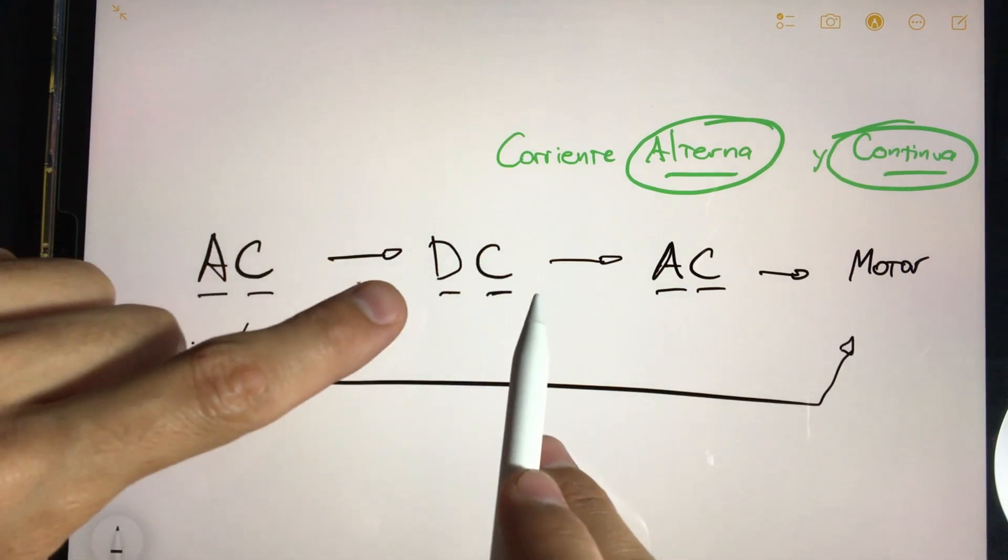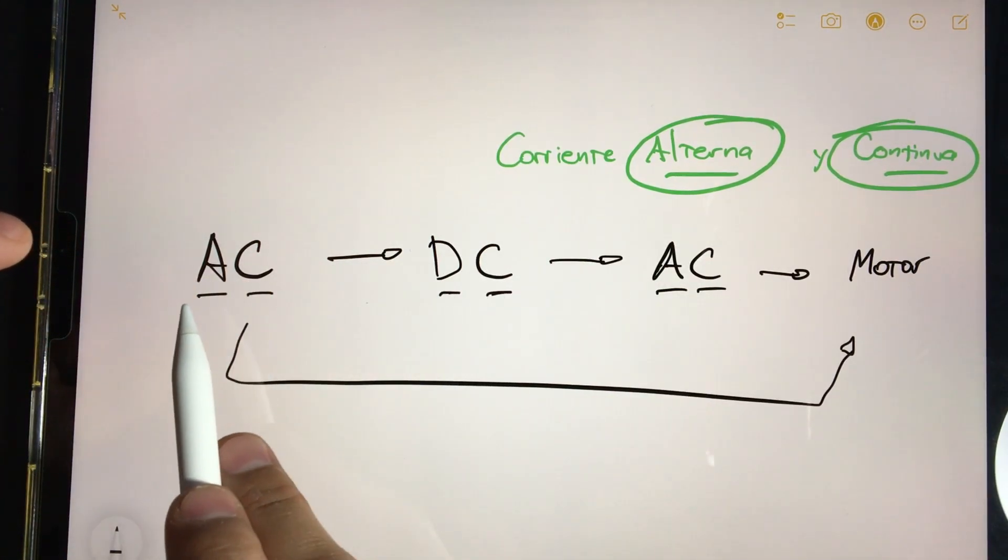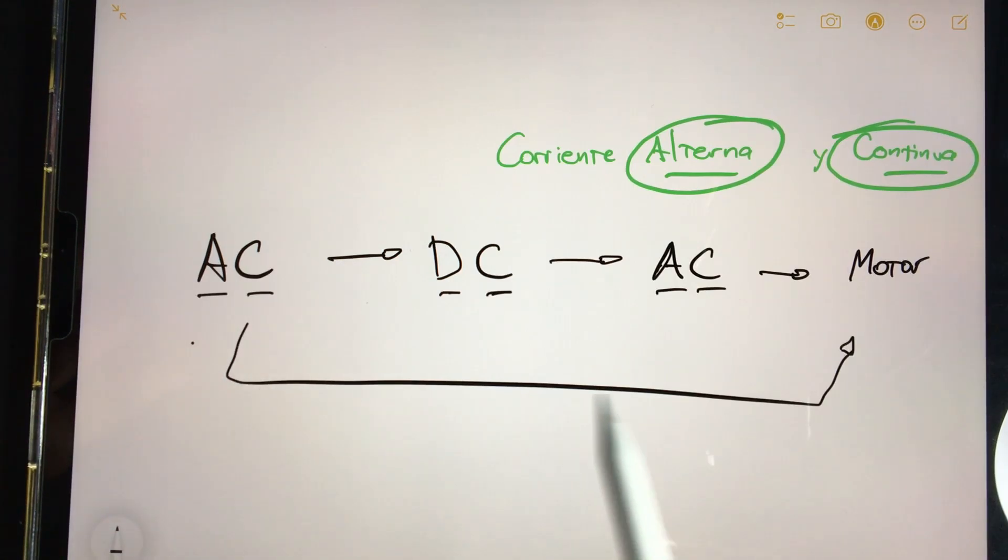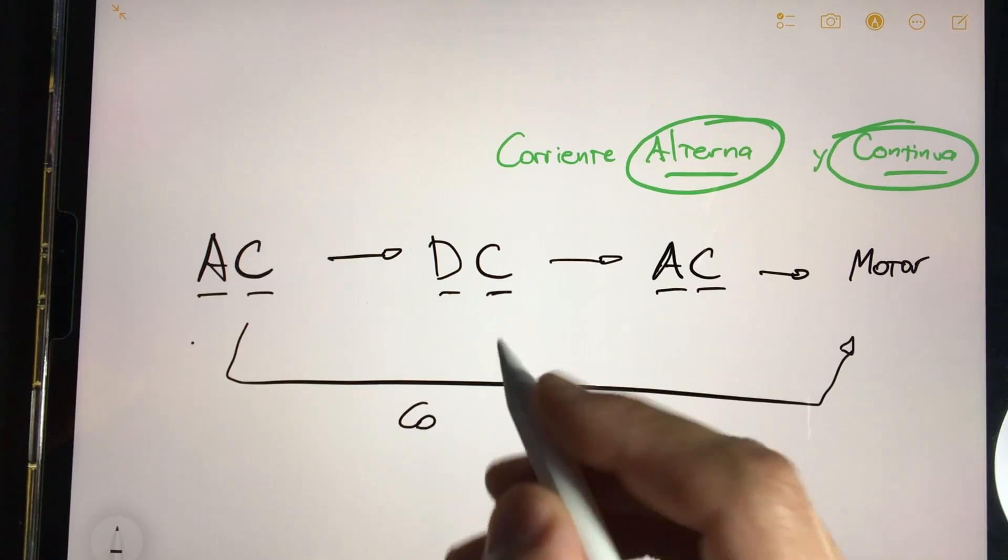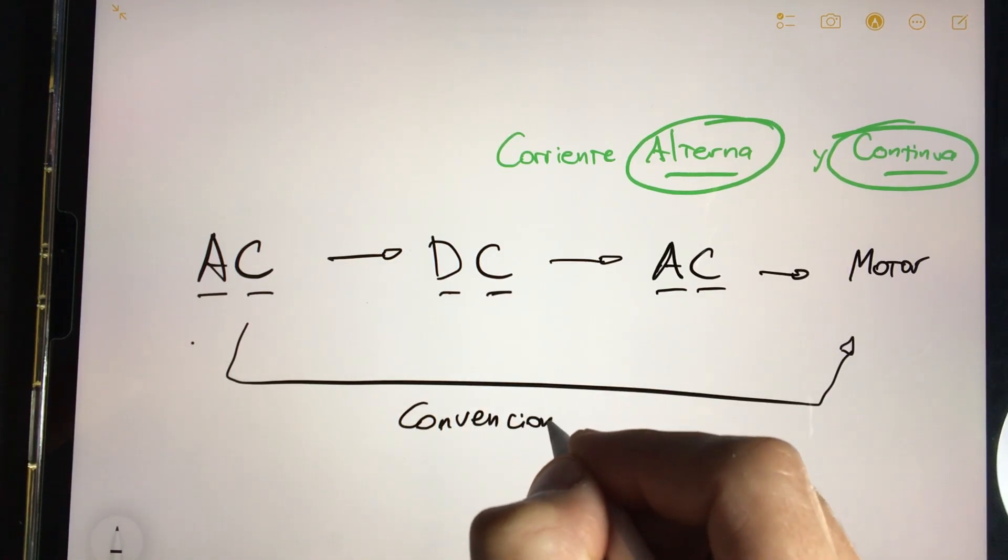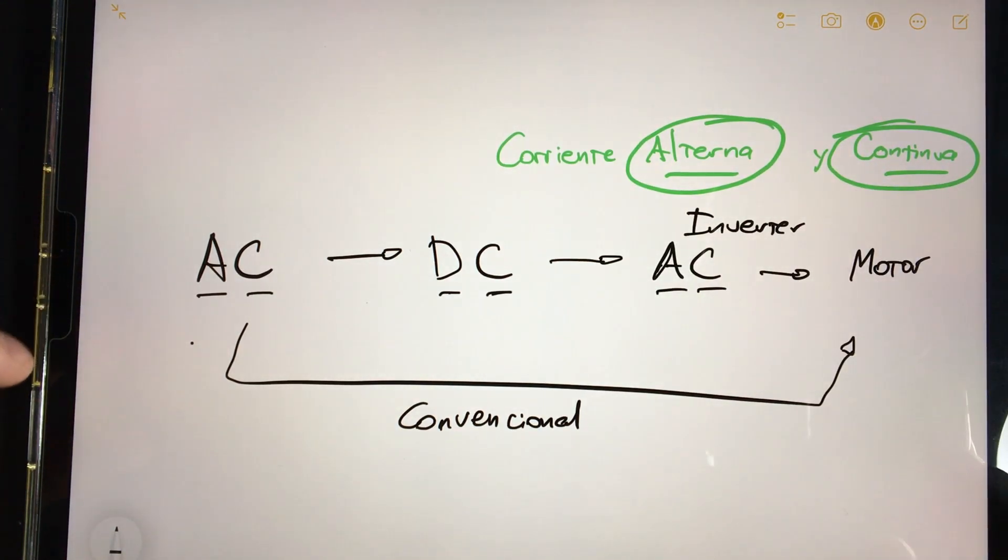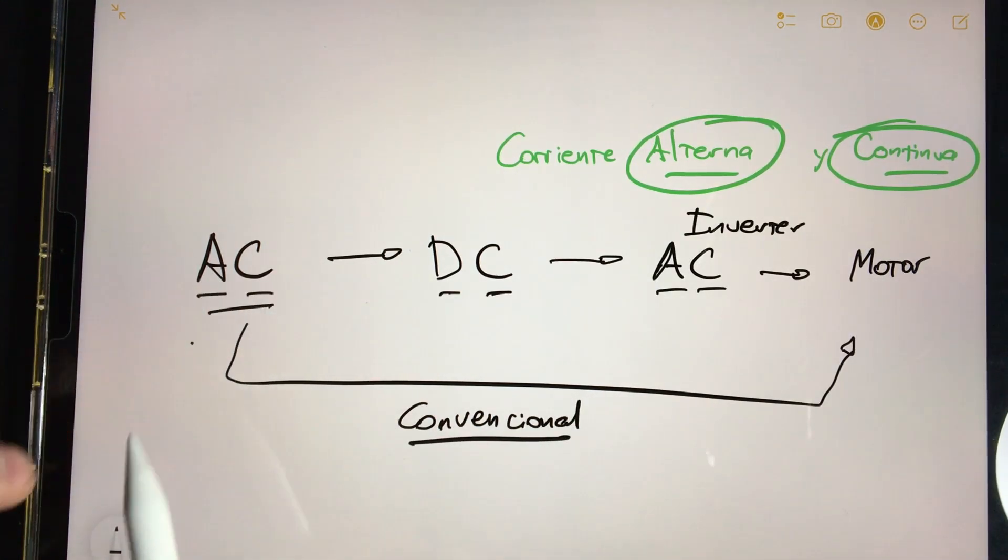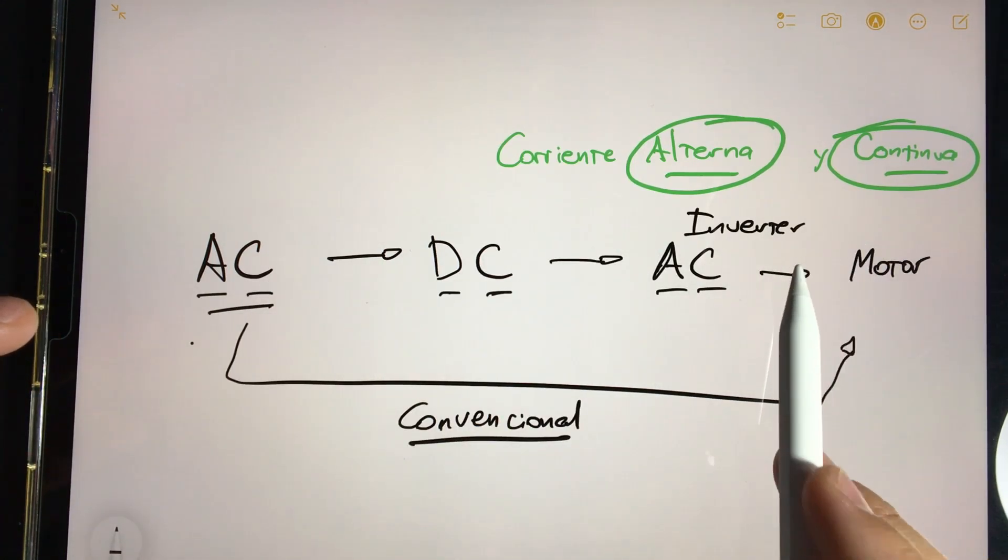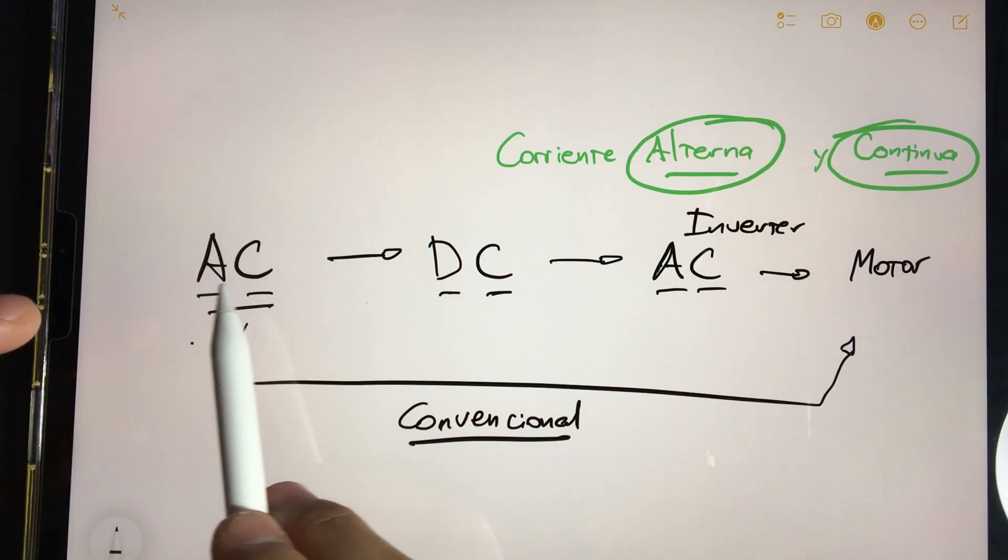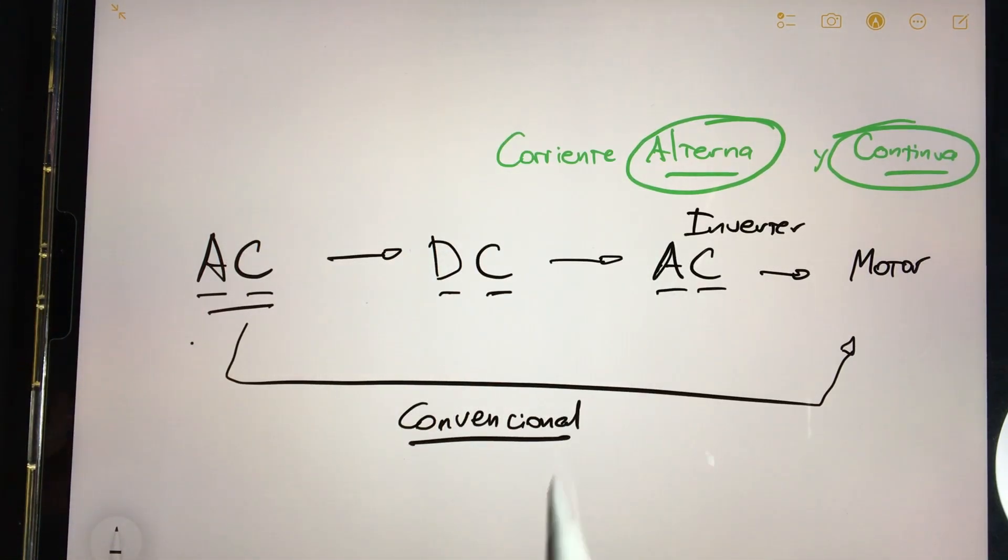That is, something is converted and that conversion is inverted again, hence its name inverter system. The motor will work with alternating current in both systems, in the conventional and in the inverter. The difference will be that the conventional motor will work with the alternating current provided by the electric company, but an inverter system will work with an alternating current that will be generated or created electronically and modified. That is the big difference between a conventional system and an inverter system.